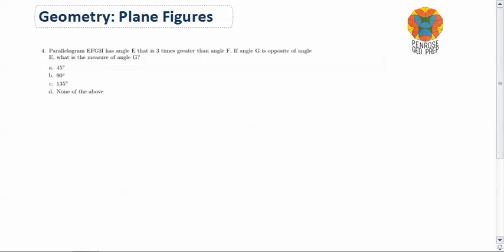First, I'm going to read the problem. The problem says parallelogram EFGH has angle E that is 3 times greater than angle F. If angle G is opposite angle E, what is the measure of angle G?